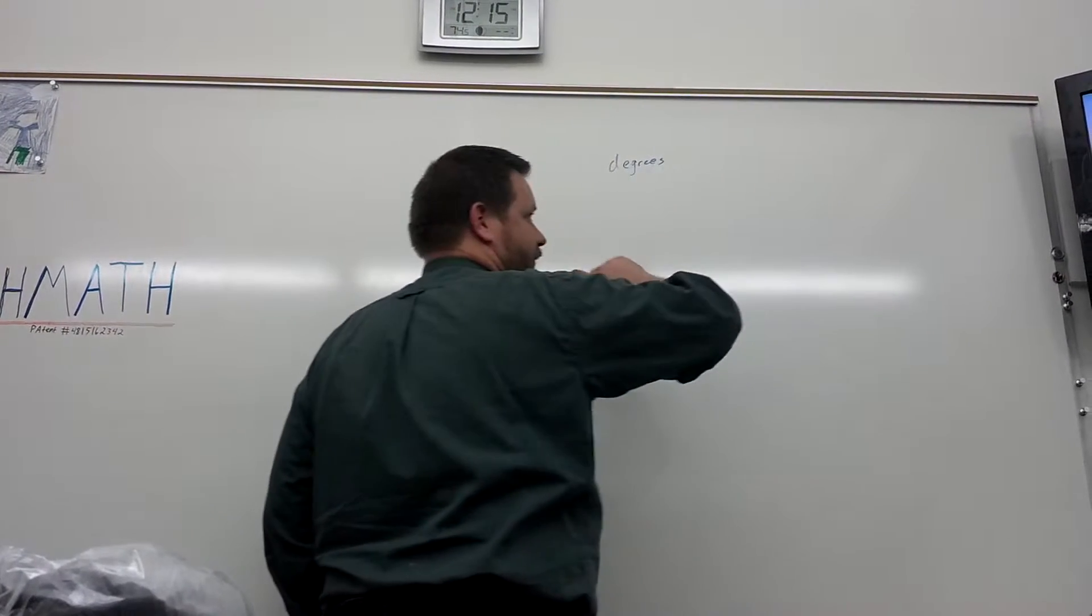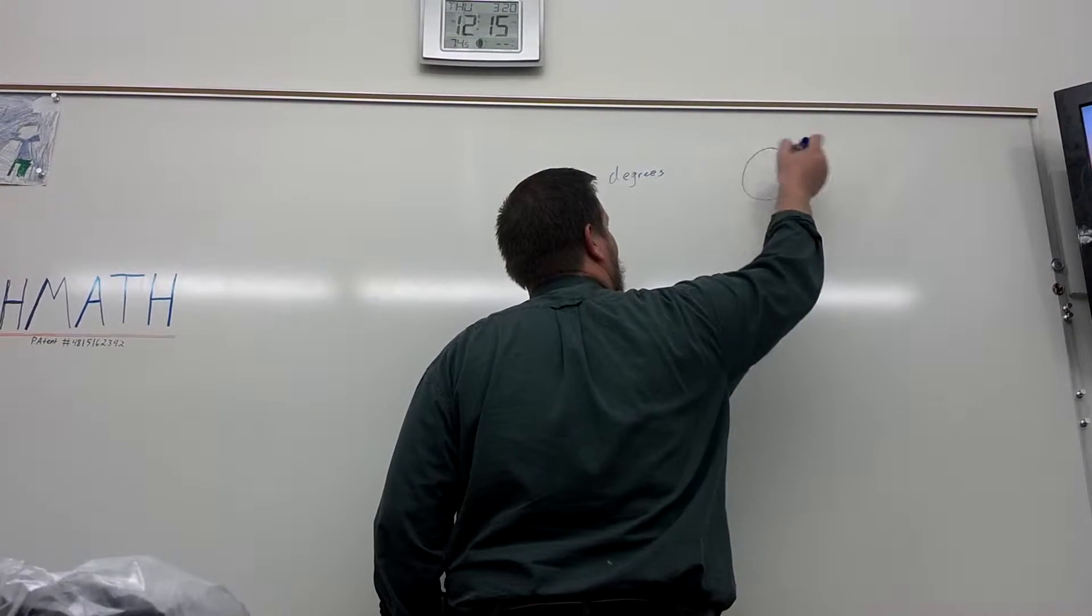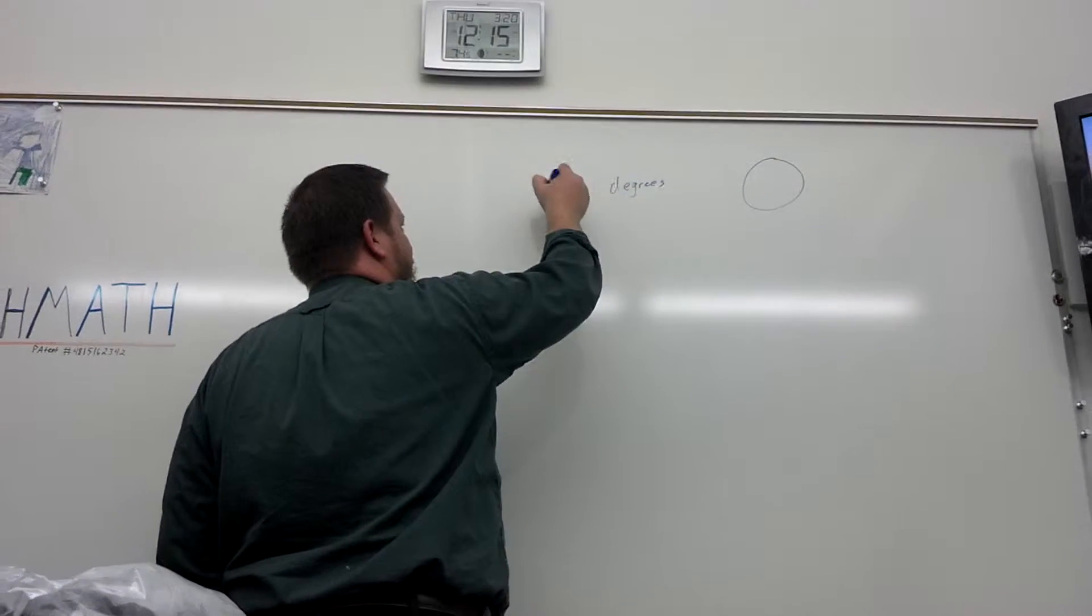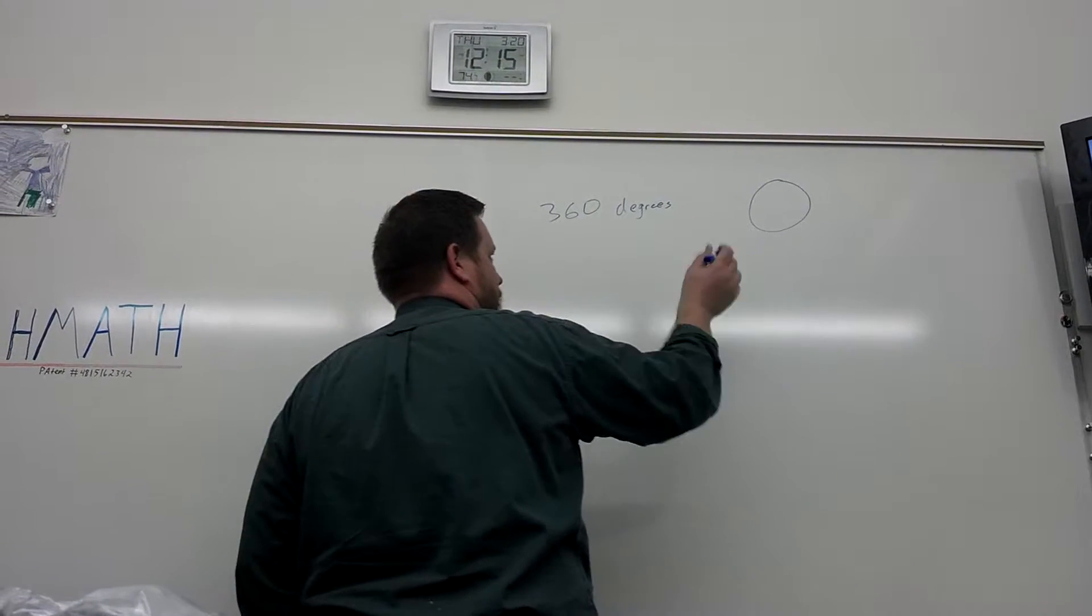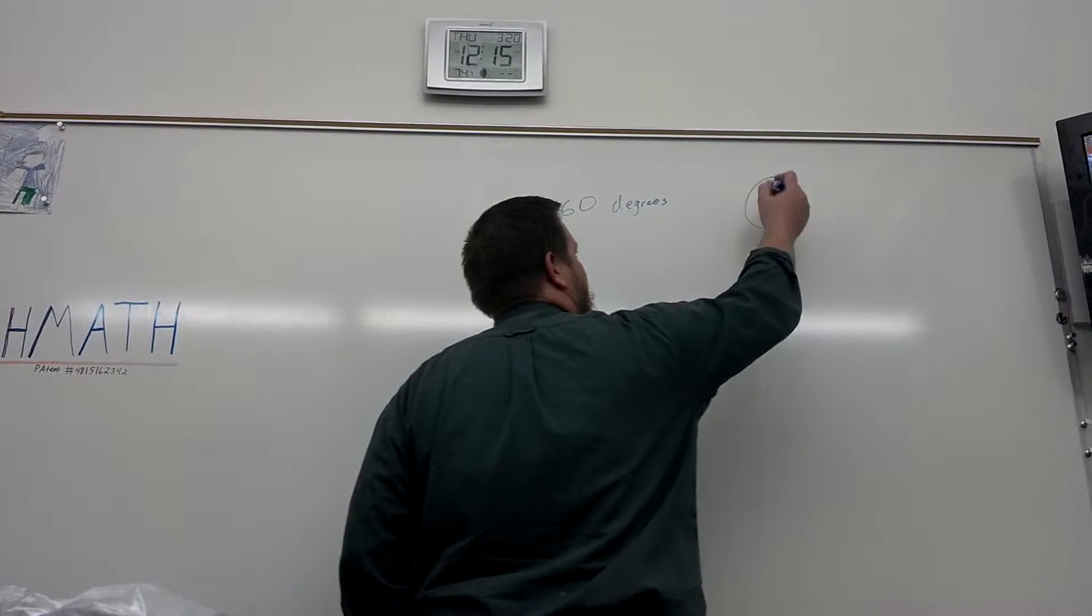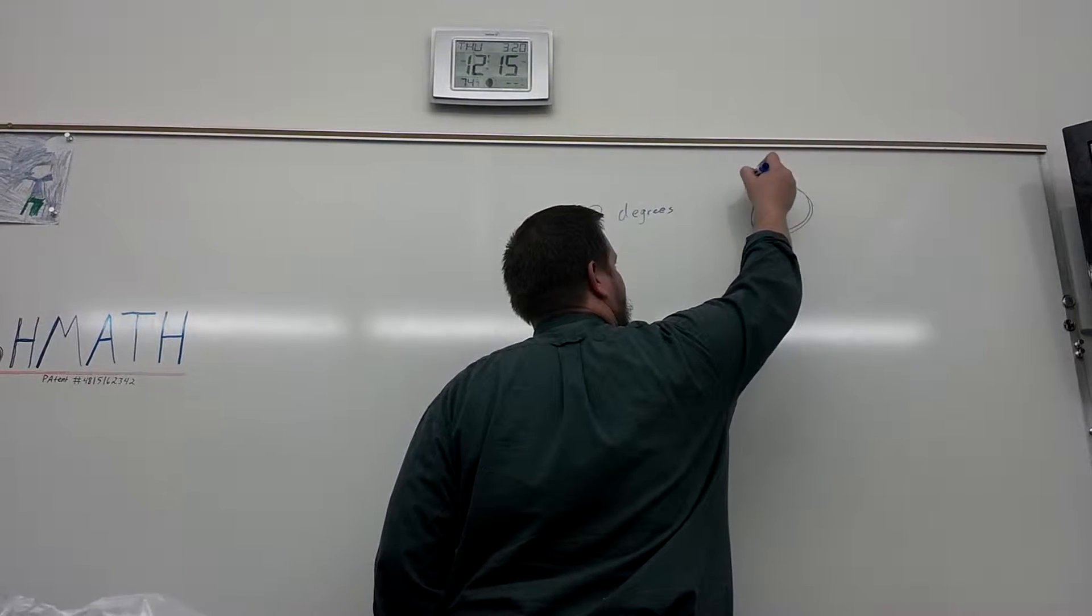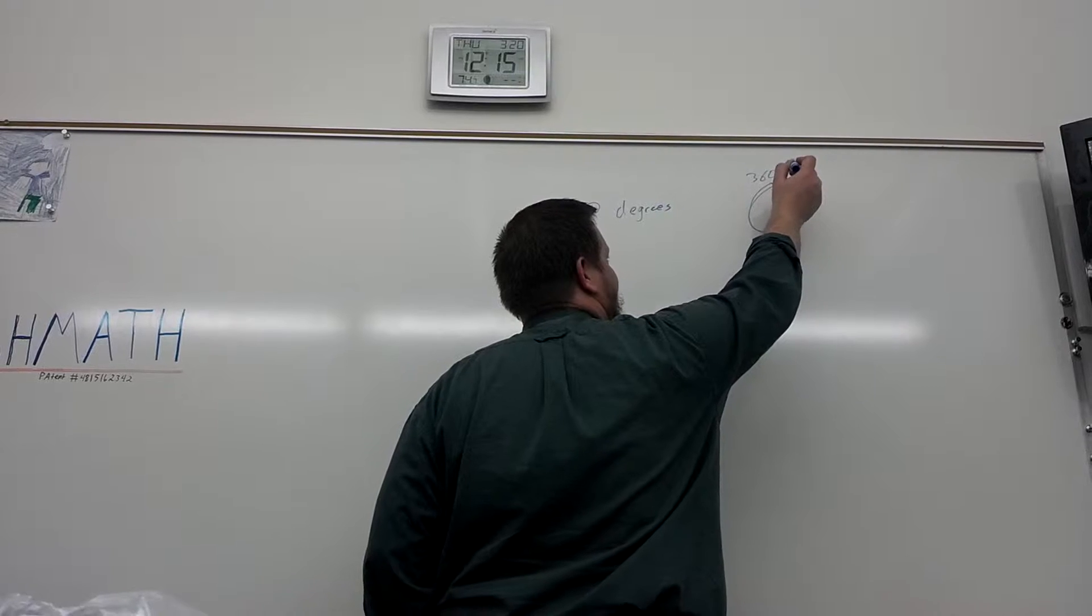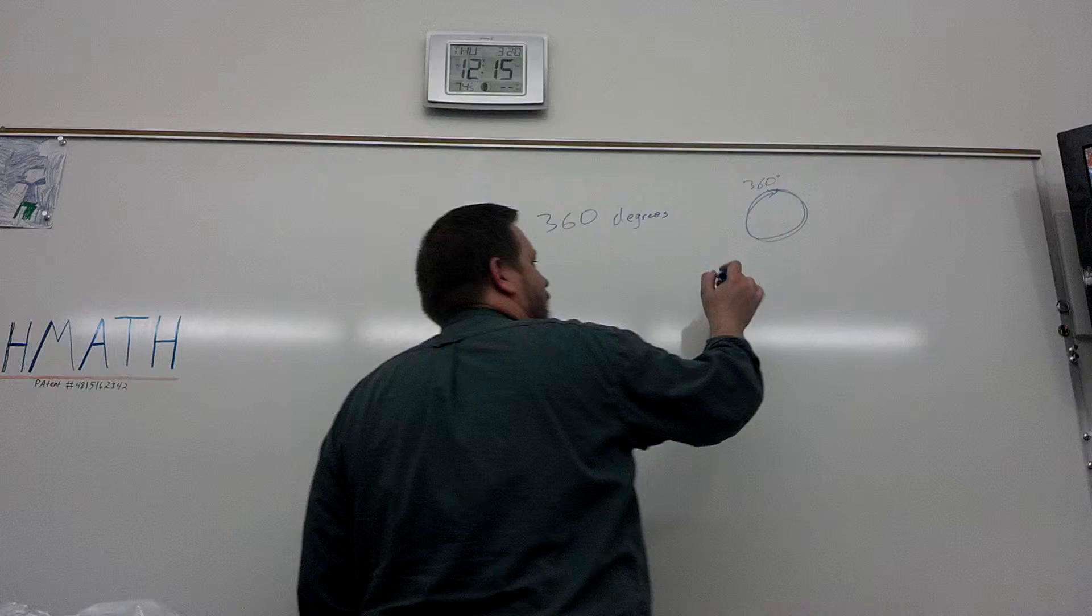In degrees. How many degrees in a circle? 360. So all the way around the circle is 360 degrees. Alright. So let's see. If we start here, go all the way around to there, we have traveled 360. The symbol for degrees is a dot. A little circle up there.